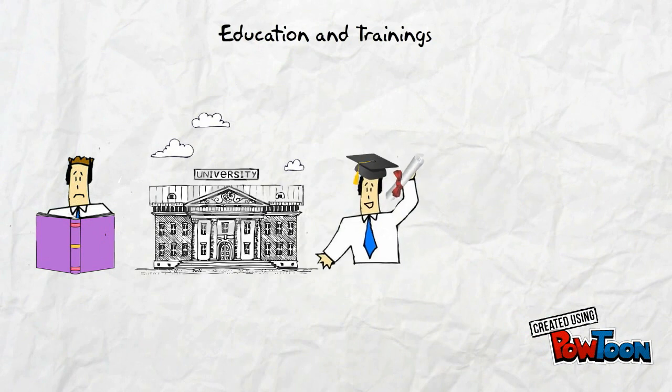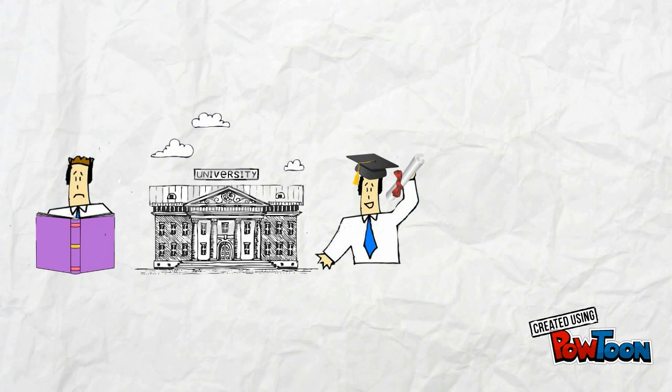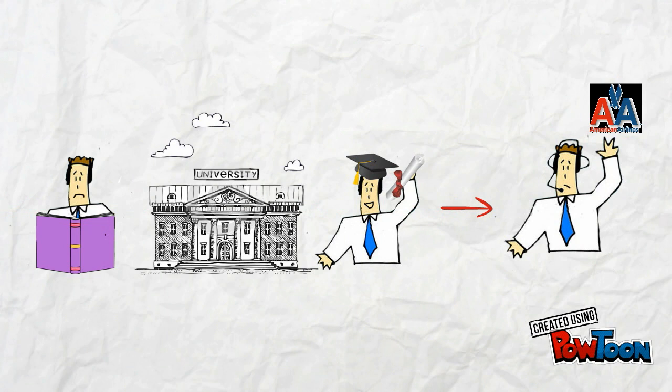Another source of wage differentials is differing amounts of human capital, which is the personal stock of knowledge, know-how, and skills that enables a person to be productive and thus to earn income. For example, Bard chose an aviation major during his university studies. He graduated and went through lots of training to be hired by American Airlines as a pilot.